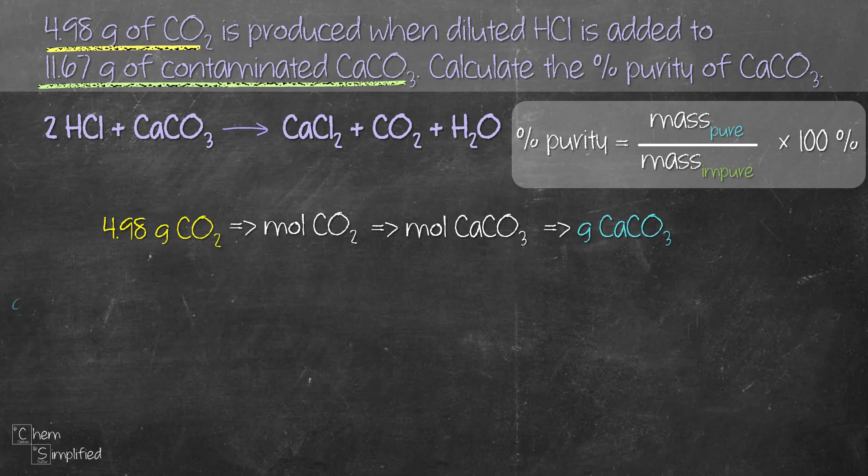So let's start with that 4.98 grams of CO2. We multiply, draw a line across, we place grams of CO2 at the bottom so that it cancels out. Our first step is to convert it to moles of CO2. So we're going to place that on the top. Now we look up the periodic table and we add up the total mass for carbon and 2 oxygen and we get 44.009 grams for 1 mole.